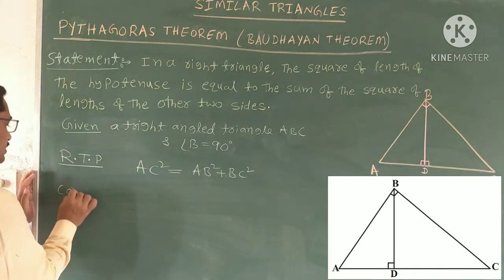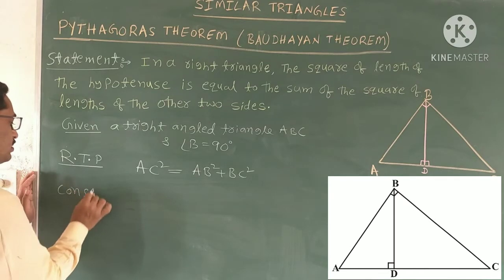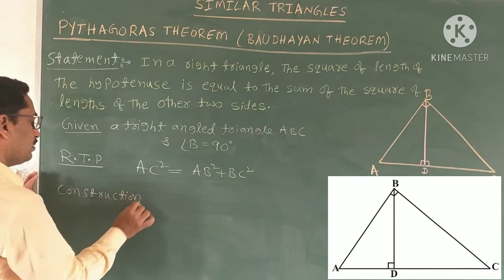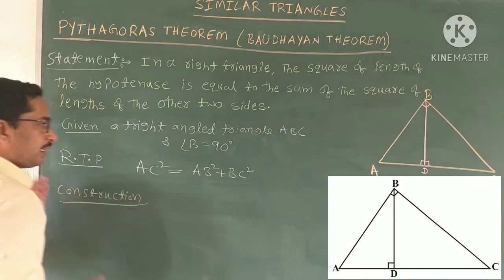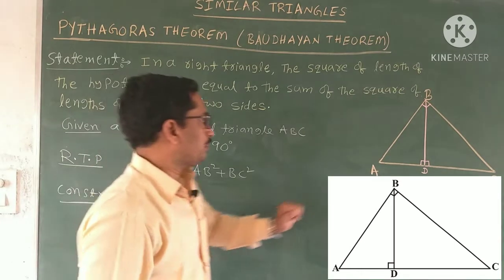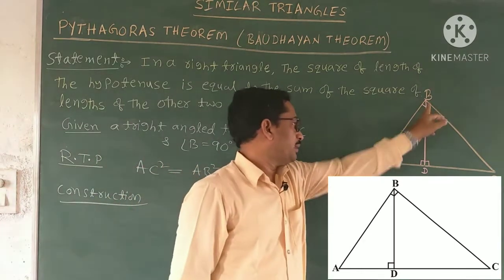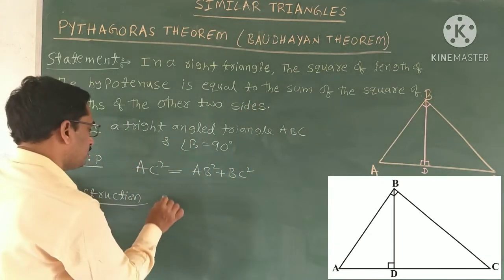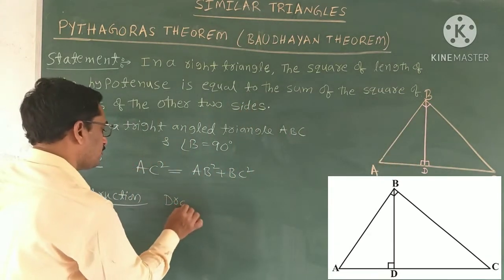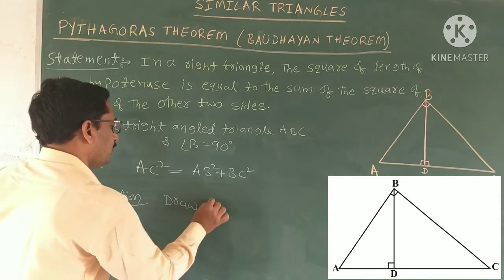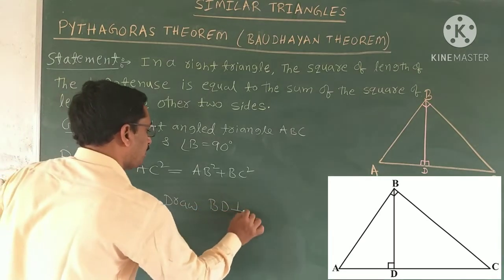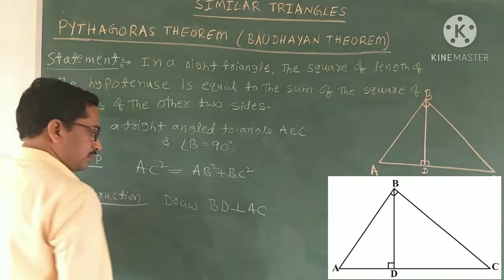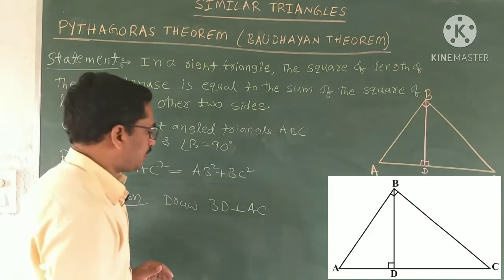Next, construction. Draw BD perpendicular to AC, so BD is perpendicular to AC.